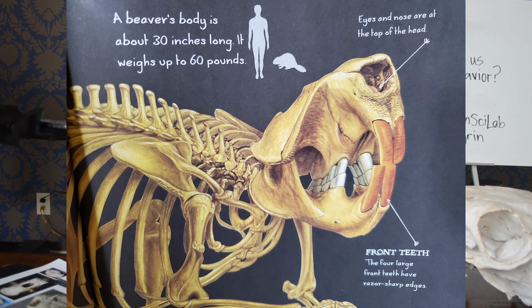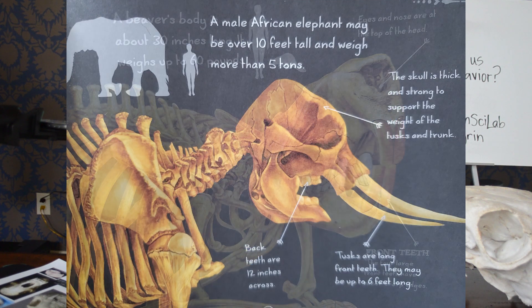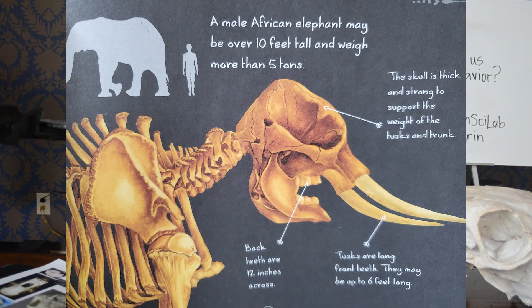Now let's take some time to practice. I'm going to show you a few pictures and we'll see if we can figure out what these animals are eating based on the shape of their teeth. Take a look at a beaver's teeth. Do you see these flat front teeth? How about these molars in the back? Beavers are herbivores. African elephants are huge and they also have huge teeth — the back teeth of an African elephant are 12 inches across. But notice they're flat molars. Elephants are herbivores too.